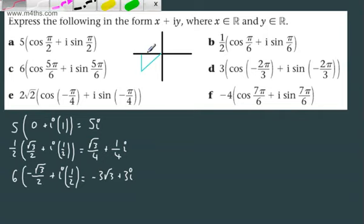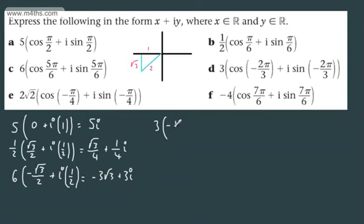So on this one we've got 3. The cosine of -2π/3 is going to be -1/2, and then we're going to have sine, which is plus i times -√3/2. So we can write this as -3/2 - (3√3/2)i.